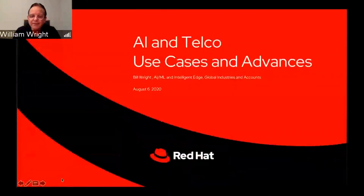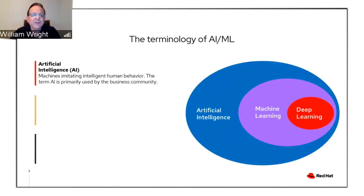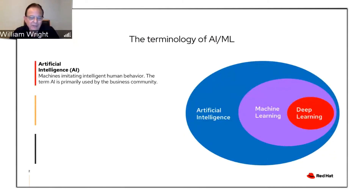I'll start off with some basic definitions — there are some broad-based terms that everybody uses. The first is artificial intelligence, which is really machines imitating intelligent human behavior. It's a term primarily used by the business community and kind of a catch-all phrase for any kind of machine that basically acts like a human.